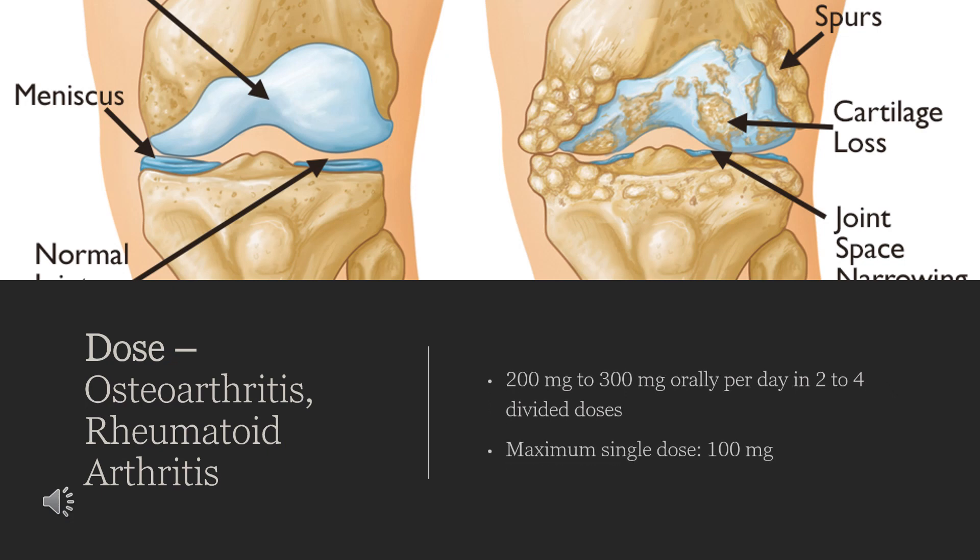For osteoarthritis and rheumatoid arthritis, the following gradually increasing dosage regimen is suggested, but should be adjusted to suit individual patient requirements: 200 mg to 300 mg orally per day in 2 to 4 divided doses. The maximum single dose is 100 mg. For inhibition of intraoperative miosis, a total of 4 drops administered by instilling 1 drop approximately every half hour beginning 2 hours before surgery is suggested.